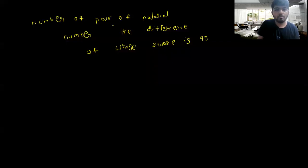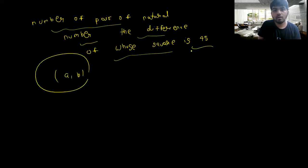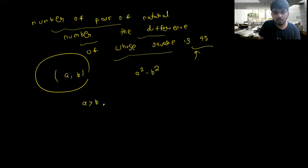We have to find the number of pairs of natural numbers where the difference of squares is 45. So basically we have a pair of type (a, b) where a² - b² = 45, which means a is greater than b.